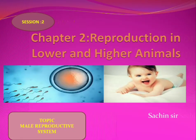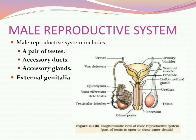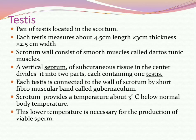Namaskar, today we are starting session number 2, chapter 2: reproduction in lower and higher animals. Today we are discussing the topic of the male reproductive system. The male reproductive system consists of pairs of testes, accessory ducts, accessory glands, and external genitalia.